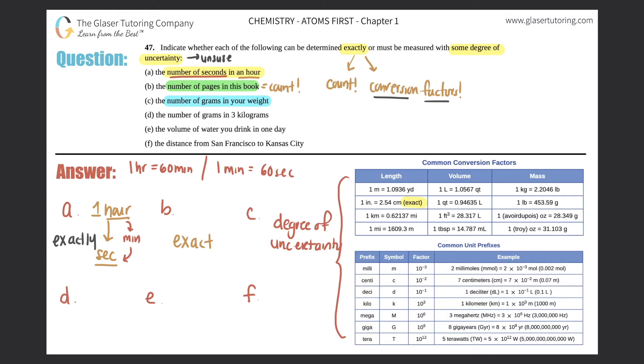Moving on, d, the number of grams in three kilograms. Here they're giving you a direct number. They're saying we got to start with three kilograms and we just want to find out the number of grams. We're literally going from three kg kilograms to grams. I'm going from one unit to another. How do I get there? I got to use a conversion factor. When I use a conversion factor, that means that I can find that out exactly. So finding out d would be an exact determination.